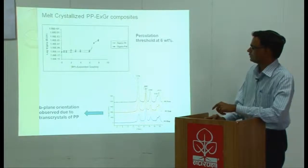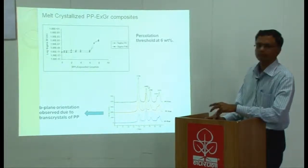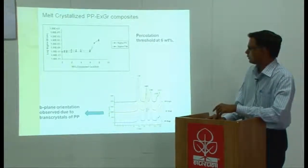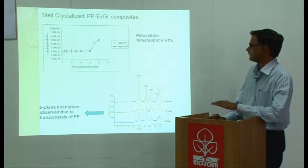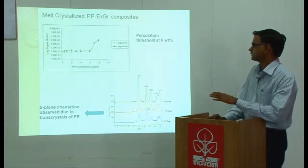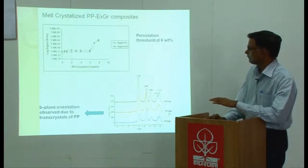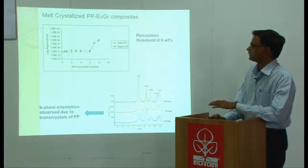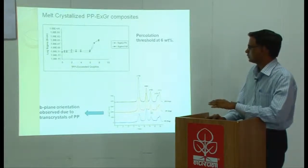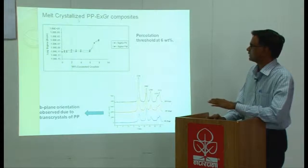This represents HKL, and this is a valid indication there is an orientation of planes which happens when you go for making composites by melt crystallization route. This is known as B plane orientation.